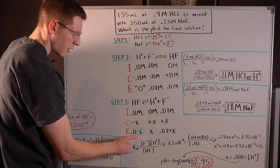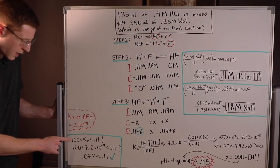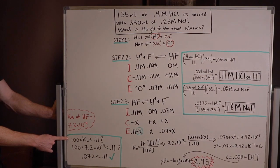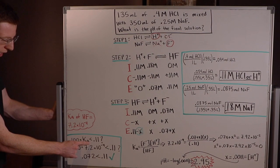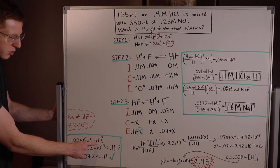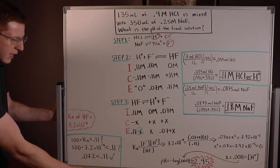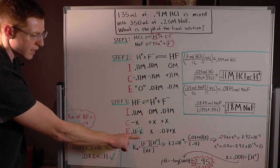And you can see I've actually left off this minus X here. And I was able to do that because the shortcut rule in this case actually applies. 100 times Ka was less than our initial reactant concentration, 0.11. You can see I've tested that here. And that allows me to ignore this minus X.